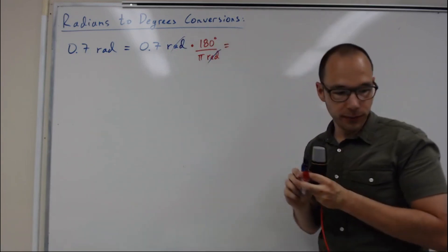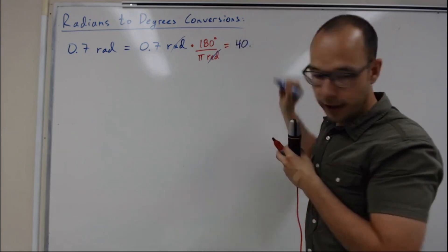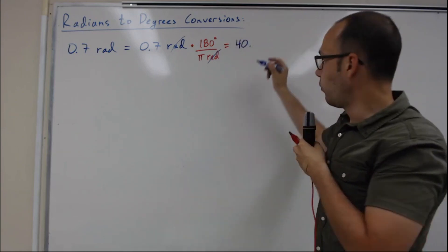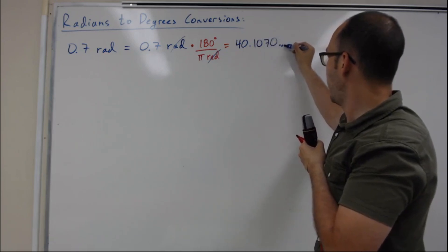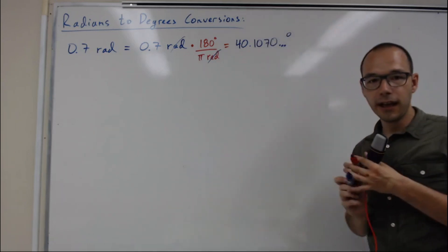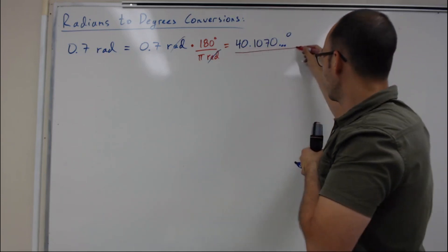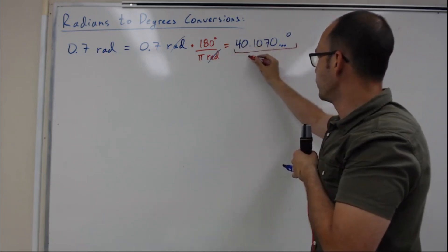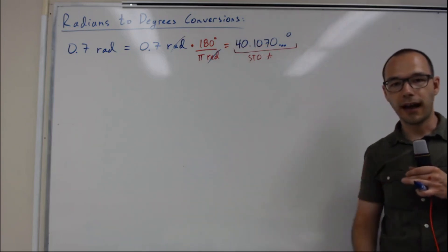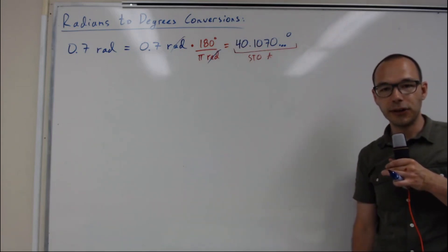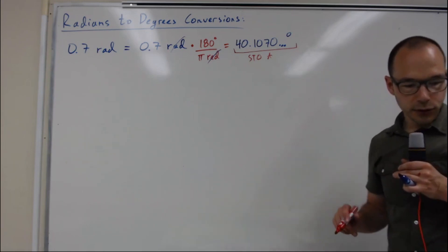This is going to be equal to 40.1070... degrees. As usual, try to store your values — store all eight digits — so you can have all the precision that you need until the end.